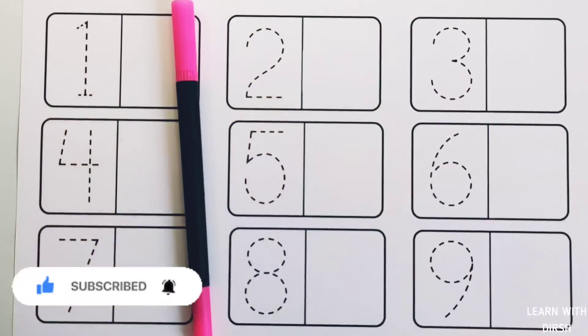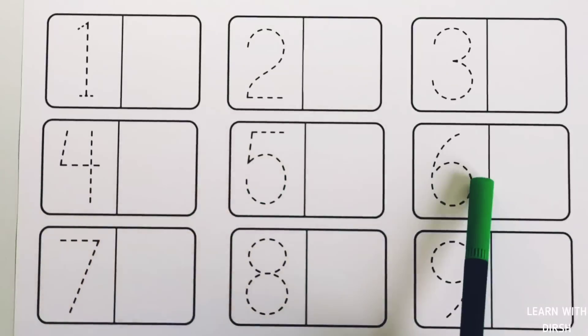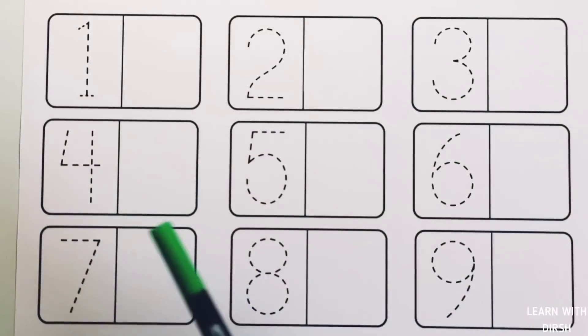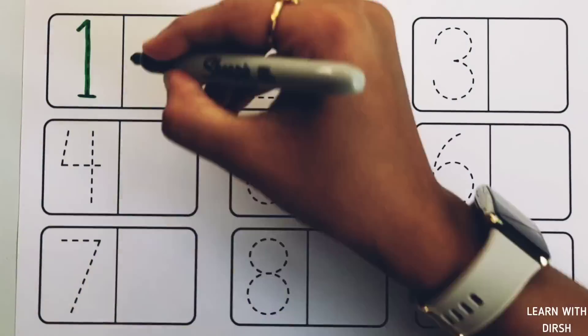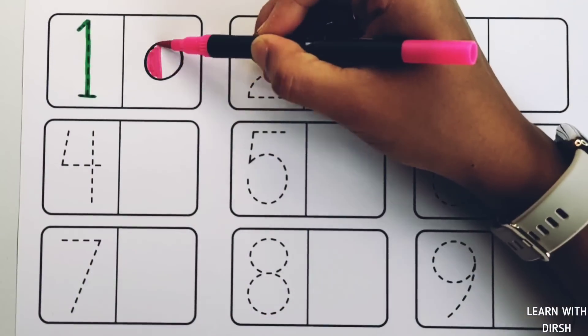Green color, pink color. Let's learn numbers: 1, 2, 3, 4, 5, 6, 7, 8, 9. Number one: one circle, pink color.